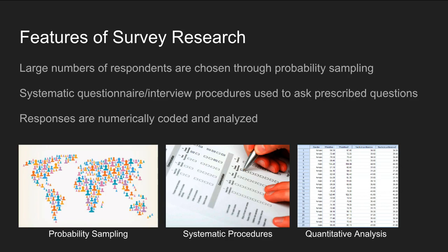Survey research has three characteristics: probability sampling methods are usually used to select a large number of respondents; systematic procedures with a set of questions that have corresponding response categories; and the quantitative analysis of survey data.